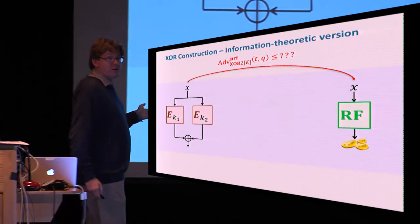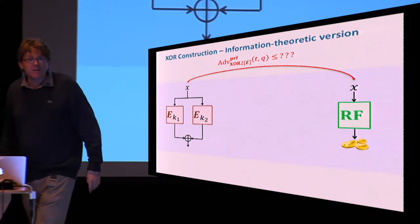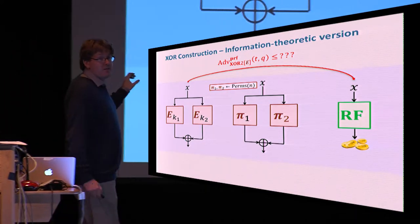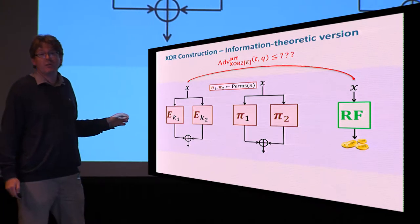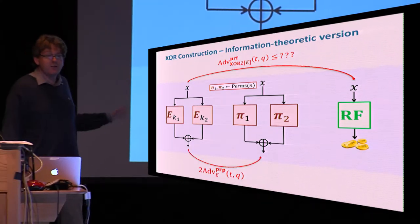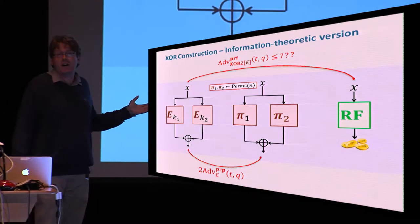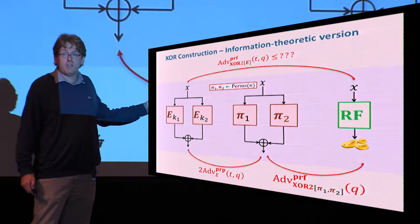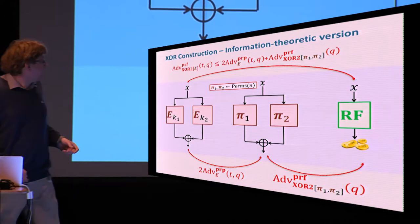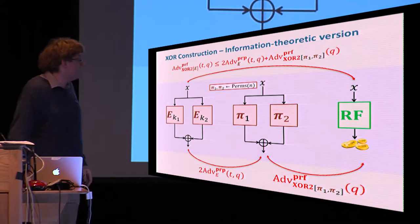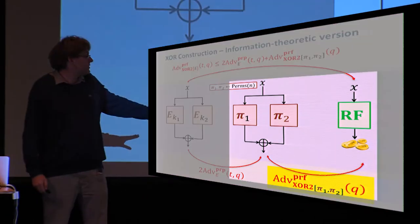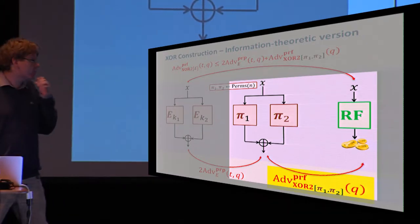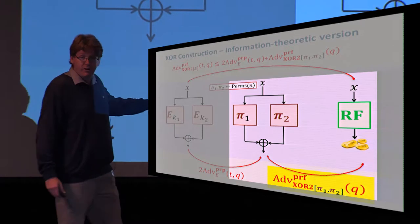The way we approach proving a bound on the PRF security is typically by transitioning to a simpler to handle intermediate world where we replace the block cipher instances with independent randomly chosen permutations. It's easy to bound the distance between the two left worlds just by the PRP advantage of the underlying block cipher, which is usually very small. Then the problem is to find a bound for distinguishing the two right-hand side worlds and combining the two bounds we can get a bound for the PRF security. We typically focus on upper bounding this term, which is the really hard problem, where we have this idealized version of the XOR2 construction or respectively the XOR construction.